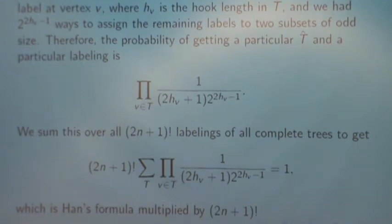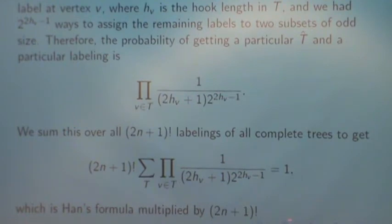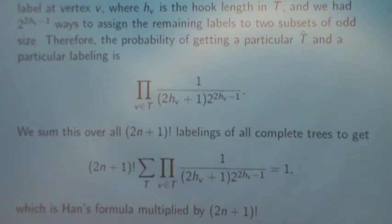And now sum that over all 2n plus 1 factorial labelings of all complete trees. To get 2n plus 1 factorial, sum over T, product of all vertices, 1 over 2hv plus 1 times 2 to the 2hv minus 1, which equals 1. And that's Han's formula multiplied by the quantity 2n plus 1 factorial.